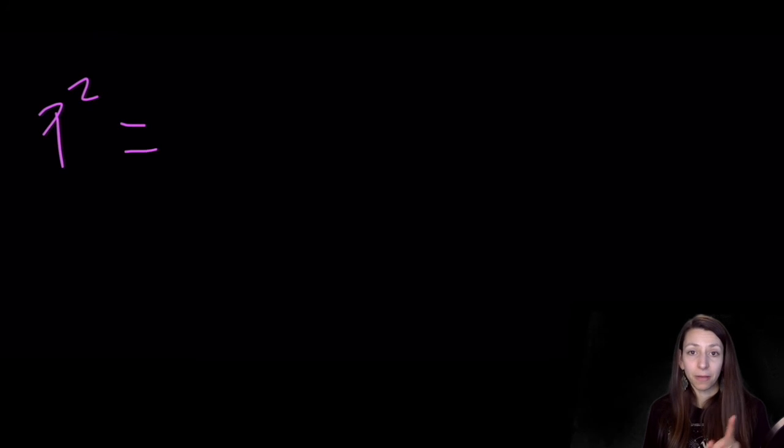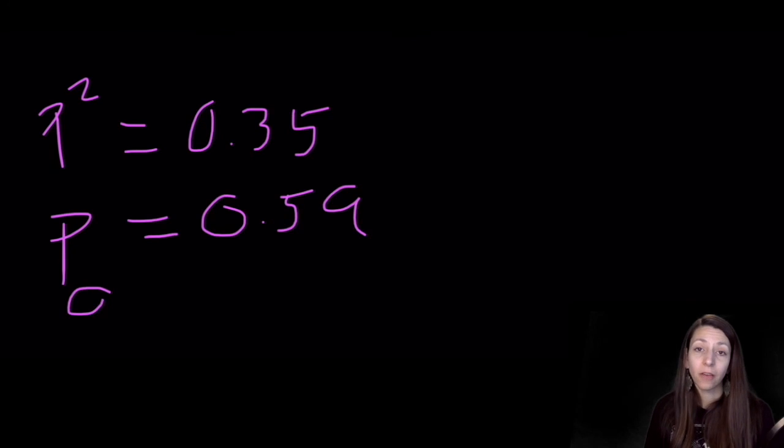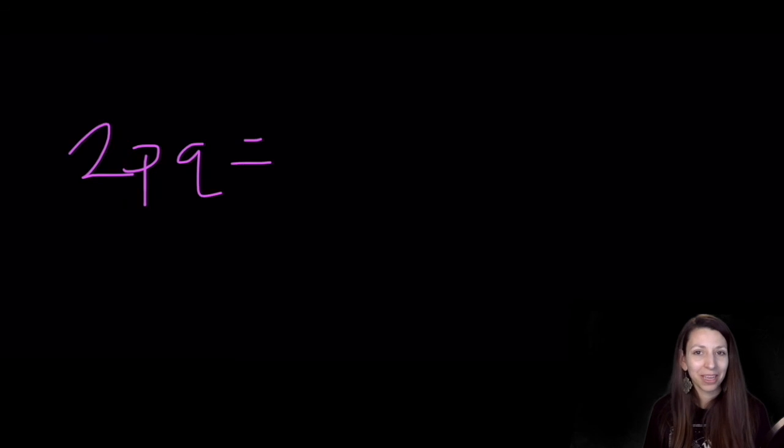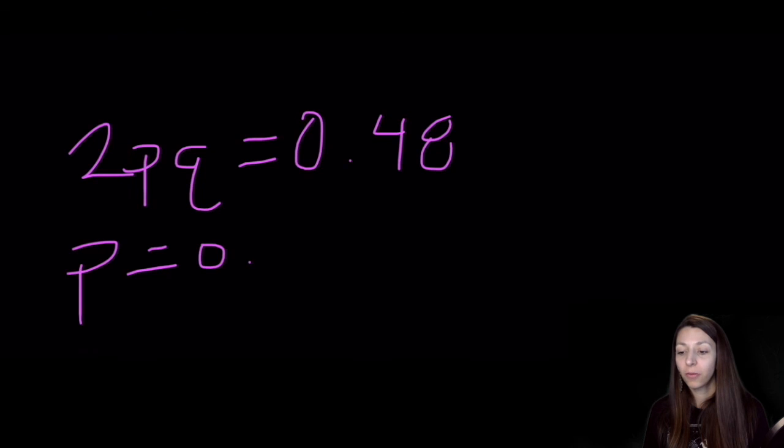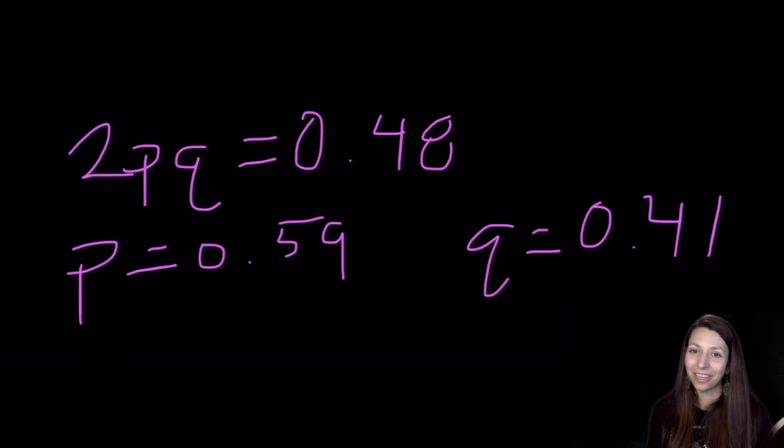We know that the frequency of the BB genotype is P². If P² is 0.35, we can take the square root to get P = 0.59. From there, we can easily solve for Q. To find the frequency of heterozygous rabbits, we need 2PQ. That's 2 times 0.59 times 0.41, which is about 0.48. The frequency of the B allele is 0.59. The frequency of the b allele is 0.41.